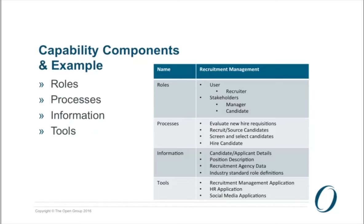Capability components is another aspect we've added to the capability guide. We're suggesting a capability is usually a combination of people or roles, processes, some information, and tools that together are able to deliver the what of a particular capability. This is also done to help make sure that we don't fall into the trap of identifying what would be a capability component as an actual capability. In our recruitment management example, we have some roles — the recruiter, a manager who's trying to hire somebody, and candidates. There will be some processes executed within that capability and some actual information usually contained within the capability itself, as well as tools — in this case largely IT applications, though tools can be almost anything, whether that's an actual building or any other tool needed.